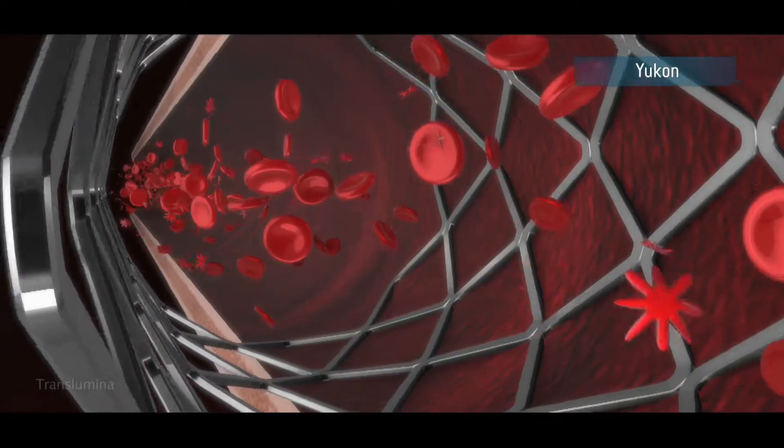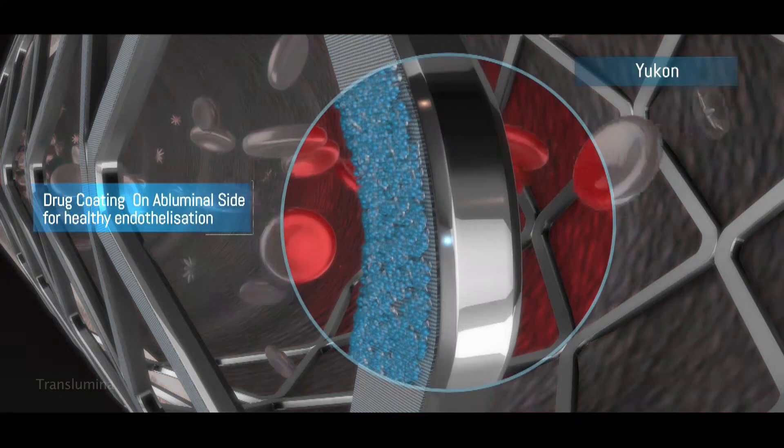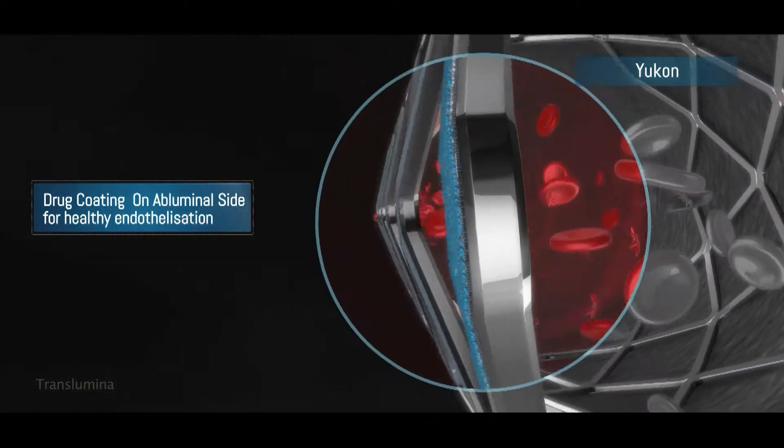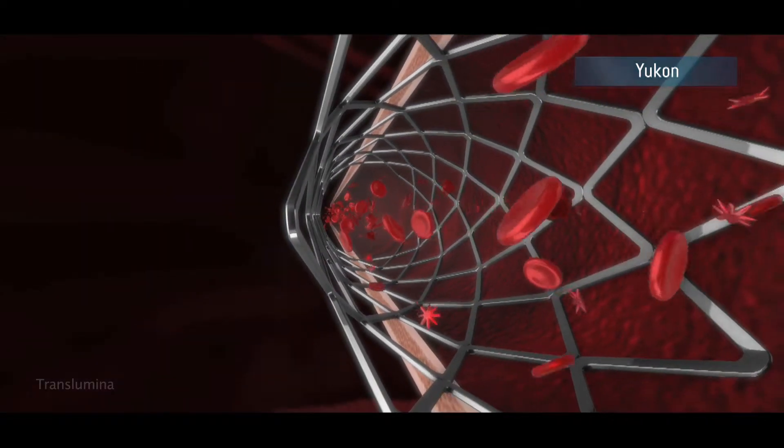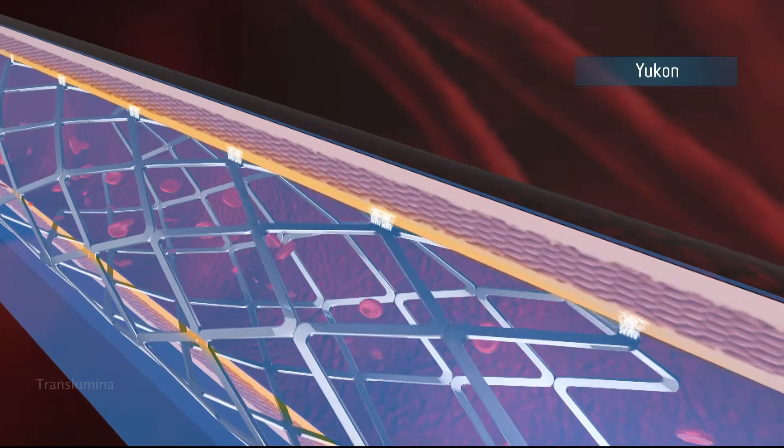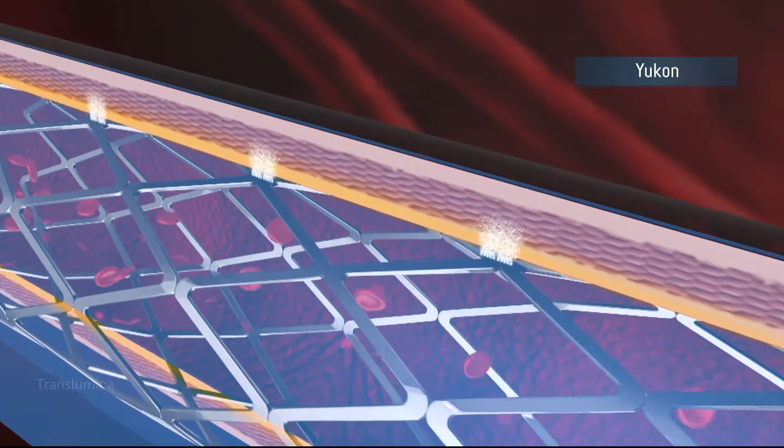Also, Yukon stent surface is coated abluminally with no drug or polymer on the luminal side of the stent for enhanced safety that results in reduction in stent thrombosis and healthy endothelialization.